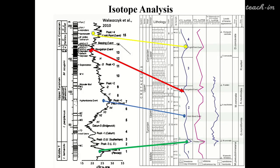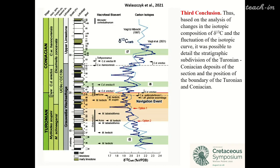This slide demonstrates the isotope analysis from the publication by Voigt et al. and our section. Third conclusion: based on the analysis of changes in the isotopic composition of δ¹³C and the fluctuation of the isotopic curve, it was possible to detail the stratigraphic subdivision of the Turonian and Coniacian of the section and to determine the position of the Turonian-Coniacian boundary.